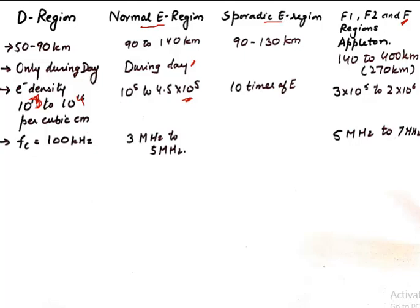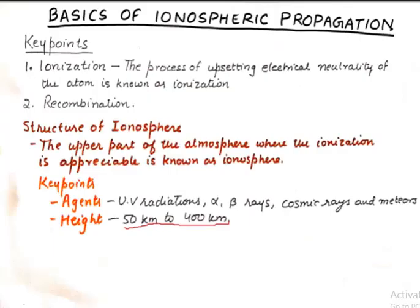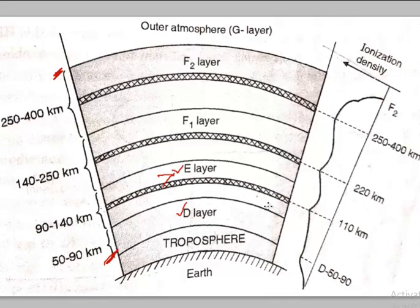That is how you can remember the various properties of the layers of the ionosphere. This diagram is super important. If you write down the values of ionization on it, that should cover everything you need to know about the layers. And that is about it for today's tutorial — that is what I wanted to discuss about the introduction to the structure of the ionosphere.